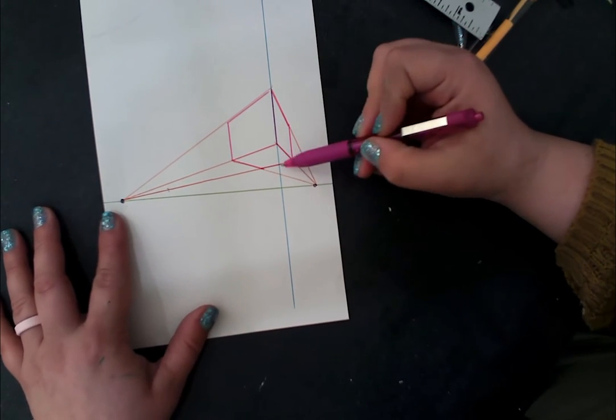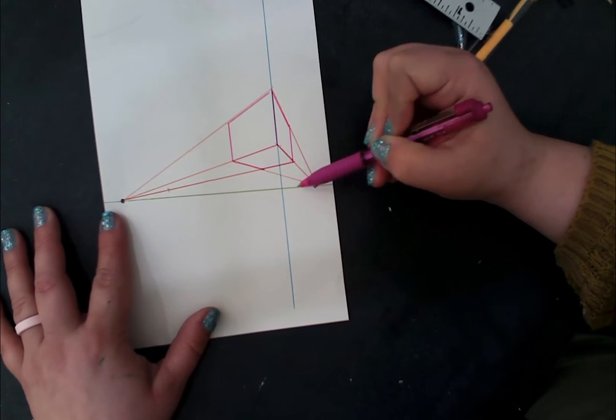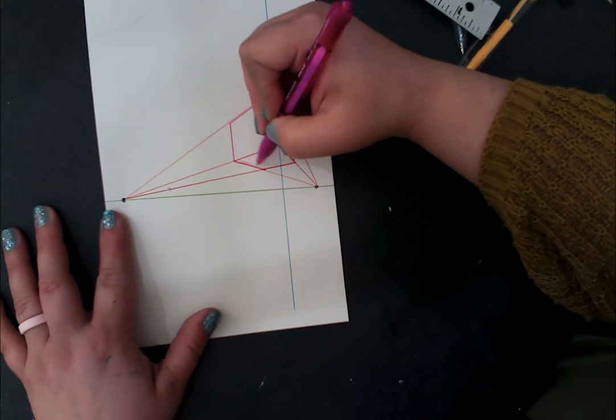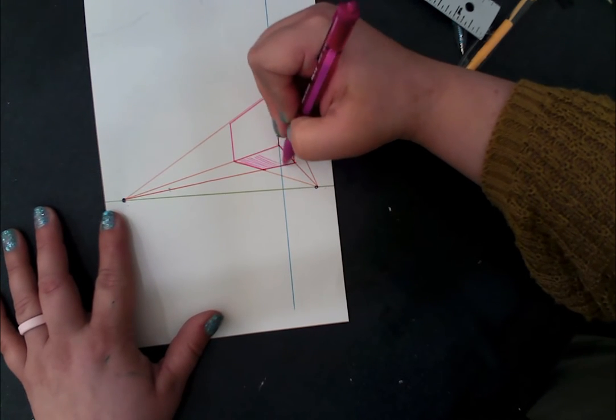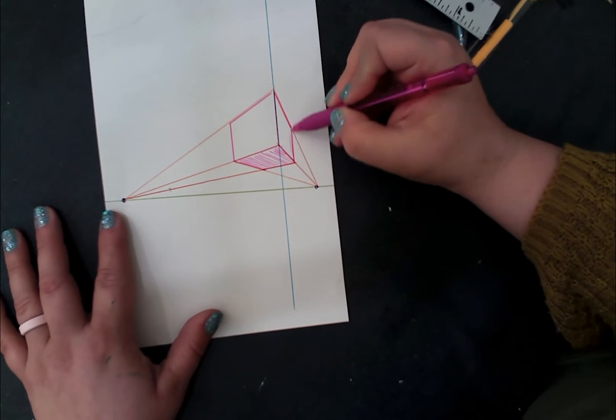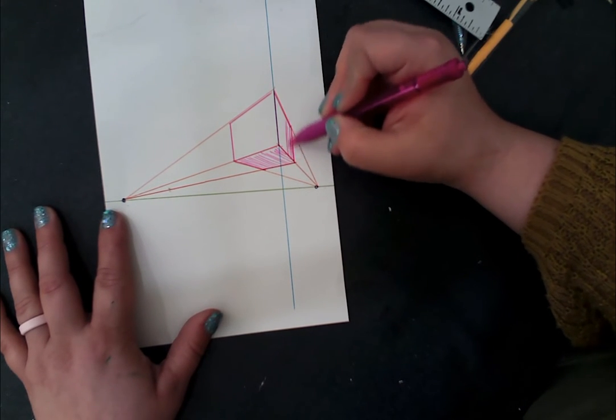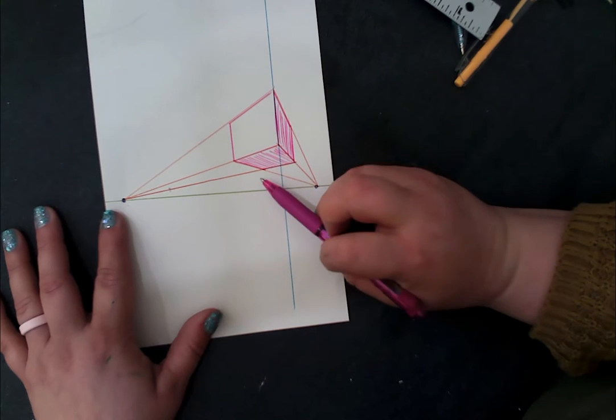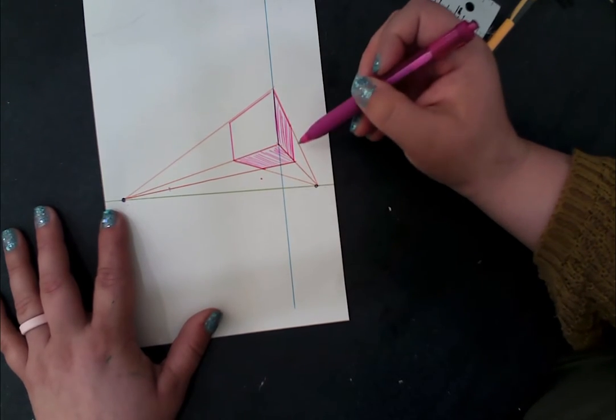Because this rectangular prism is above my horizon line, this is the bottom of my shape. This is the right side. We have the left side, and the top cannot be seen.